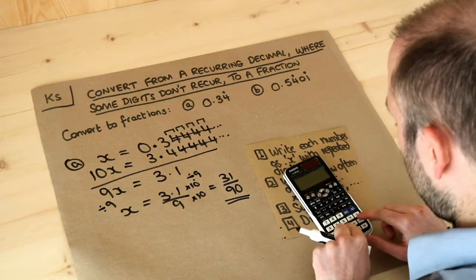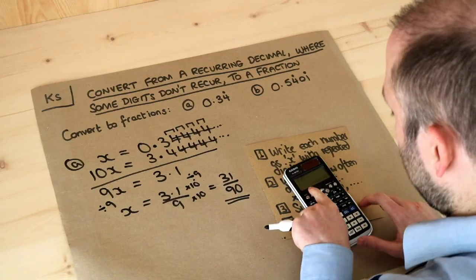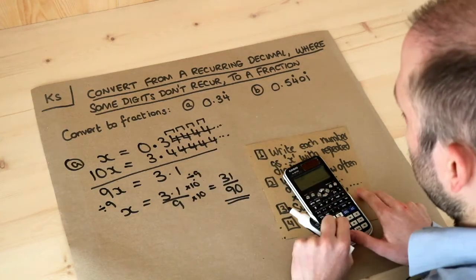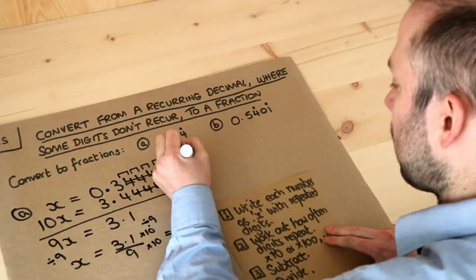Let's just check that on a calculator. If we do 31 divided by 90 and press the SD key we get 0.344444444 which is right. That's exactly what we've got there. So that was correct. What about this second one? This is a bit harder.